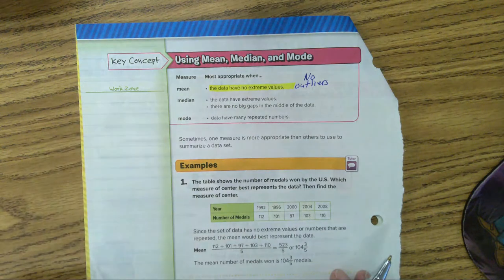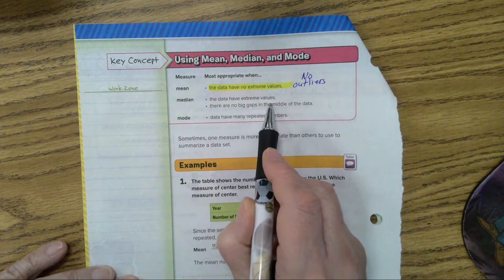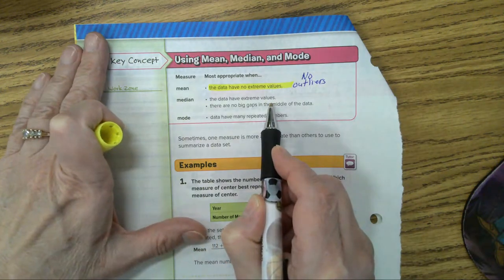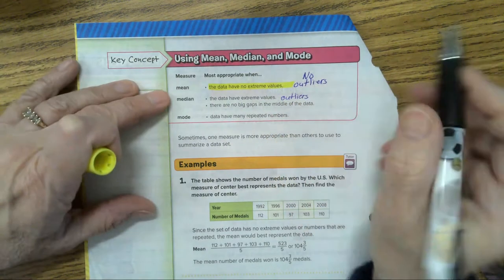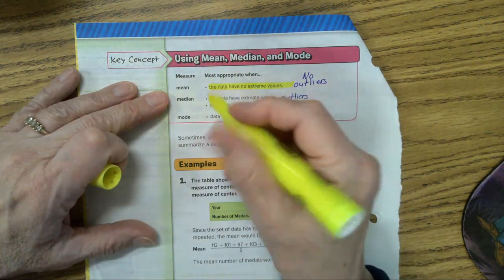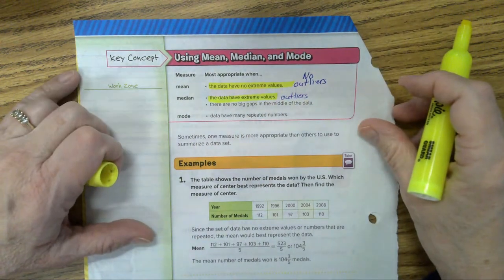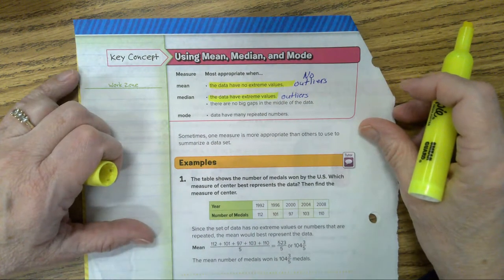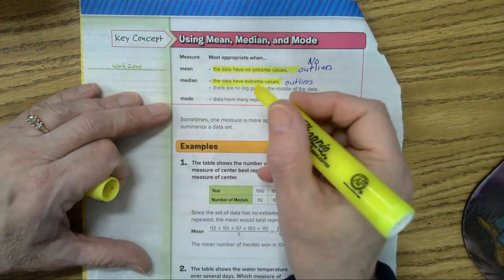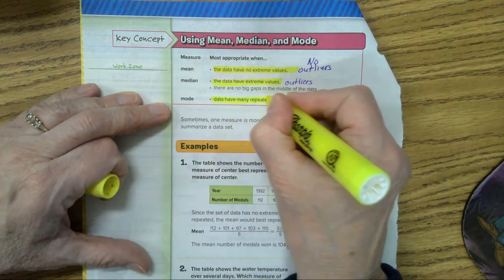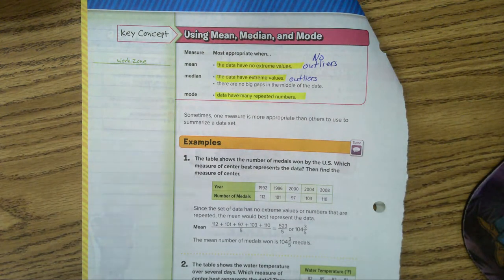Median. When would I use the median? When the data have extreme values. What's our word for extreme values? Outliers. When you have outliers, you're going to use the median. Okay? The other thing, there are no big gaps in the middle of the data. And when would you use the mode? I'll be honest, you don't see it too often. When the data have many repeated numbers. When it has a whole lot of repeated numbers, then you would use the mode. Remember, the mode's the number that occurs the most.